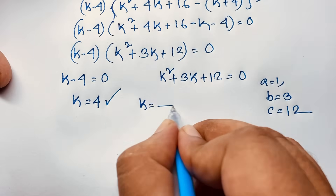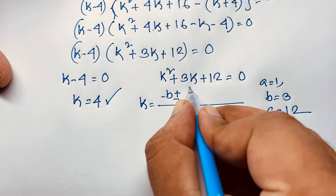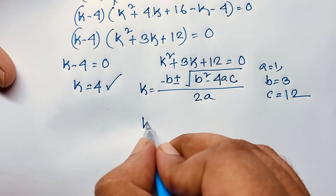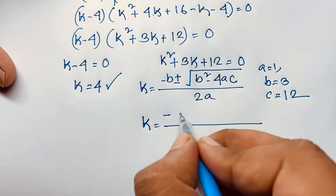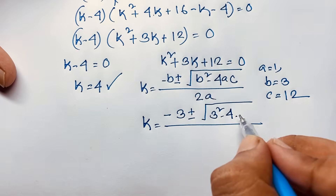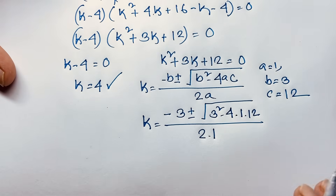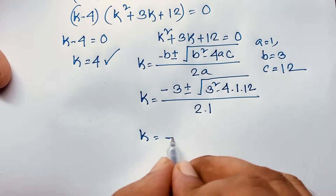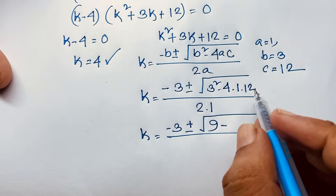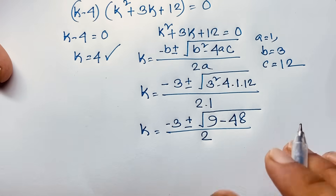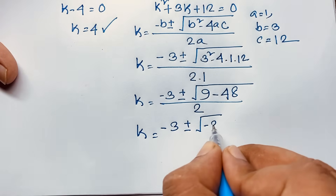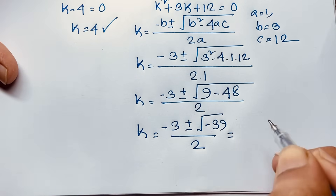Applying the quadratic formula: k equals negative b plus or minus square root of b squared minus 4ac, over 2a. Substituting: k equals negative 3 plus or minus square root of 3 squared minus 4 times 1 times 12, over 2 times 1. That gives k equals negative 3 plus or minus square root of 9 minus 48 over 2.